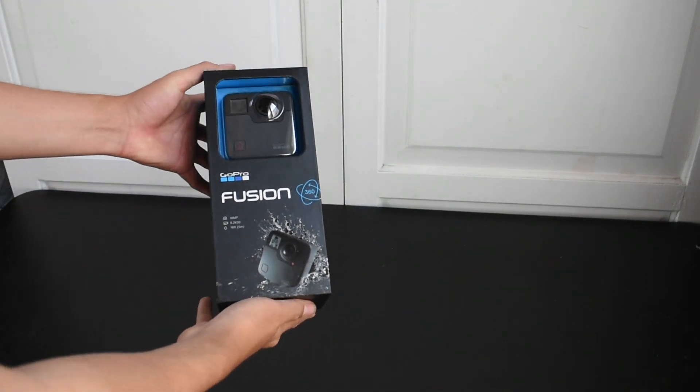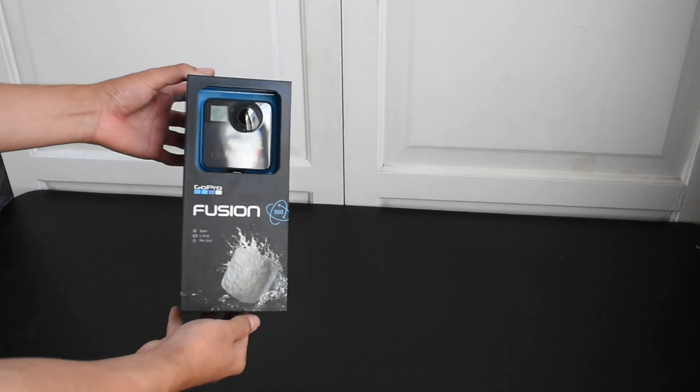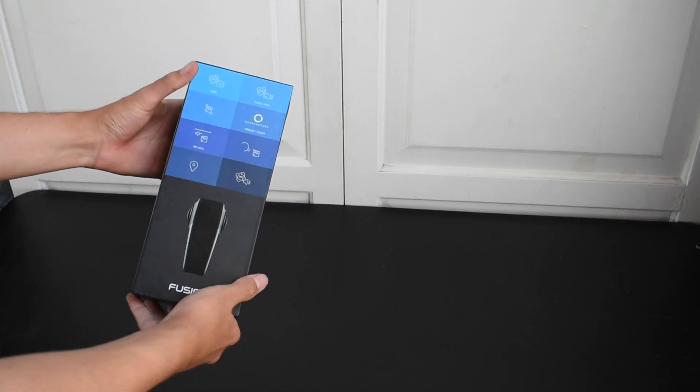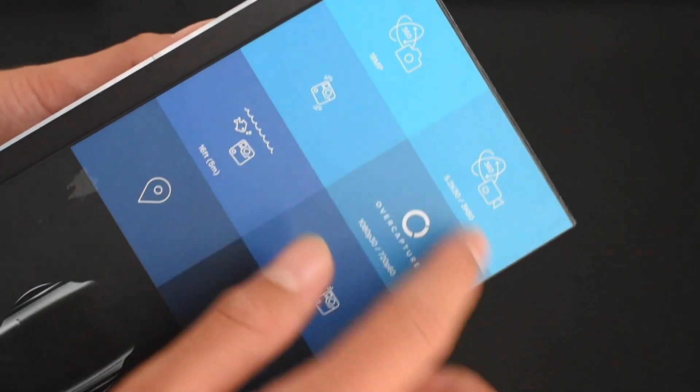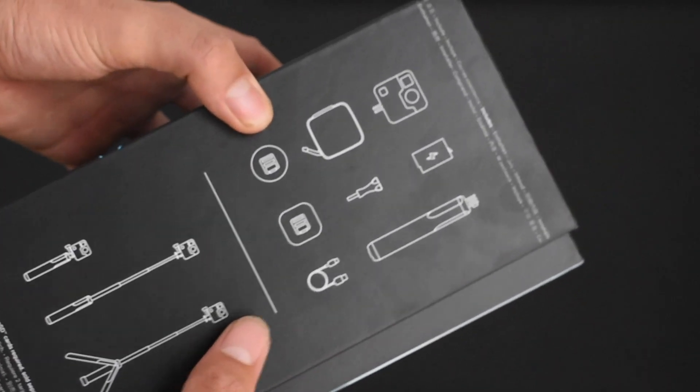The box is as you would expect from a GoPro camera. On the sides, it shows the specs of the quality and what it can do, and what it has inside.